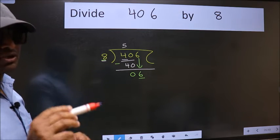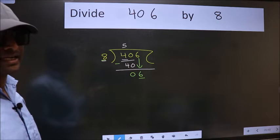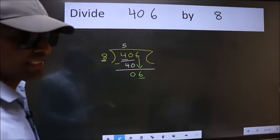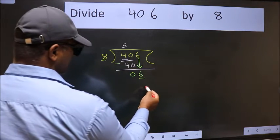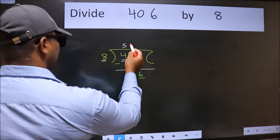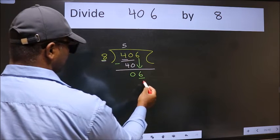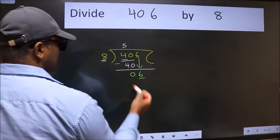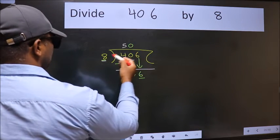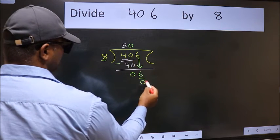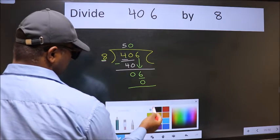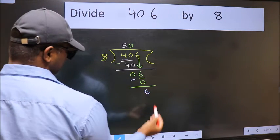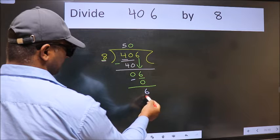Instead of that, what we should think of doing is: which number should we take here? If I take 1, we will get 8, but 8 is larger than 6. So what we do is we take 0. So 8 into 0 is 0. Now we subtract, we get 6.